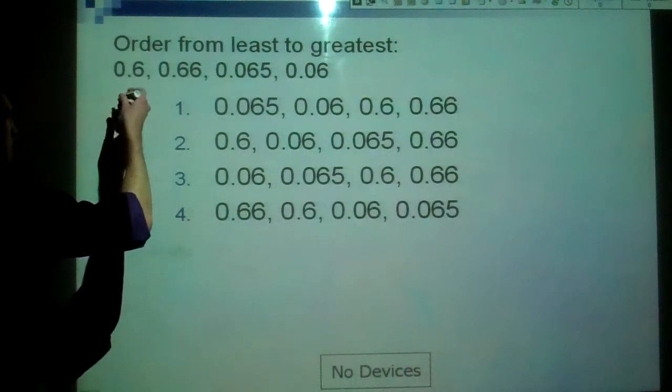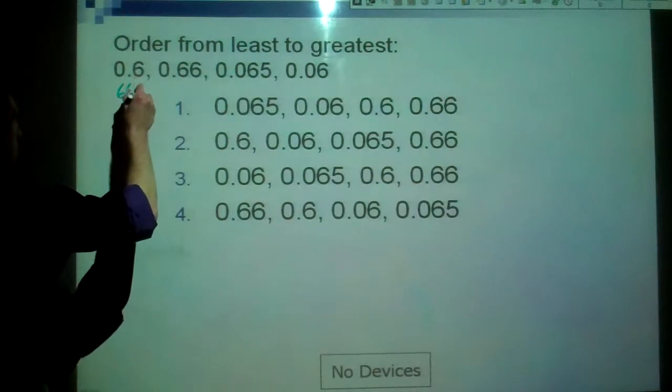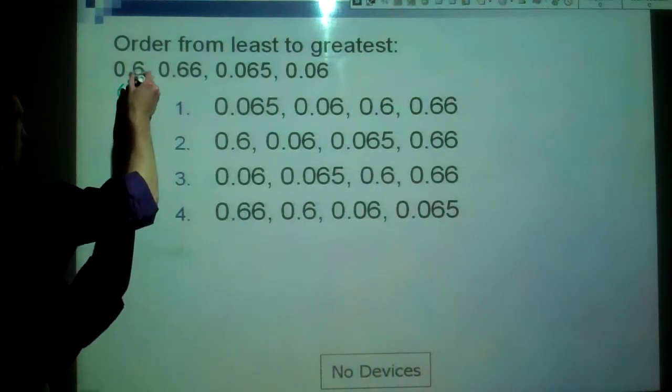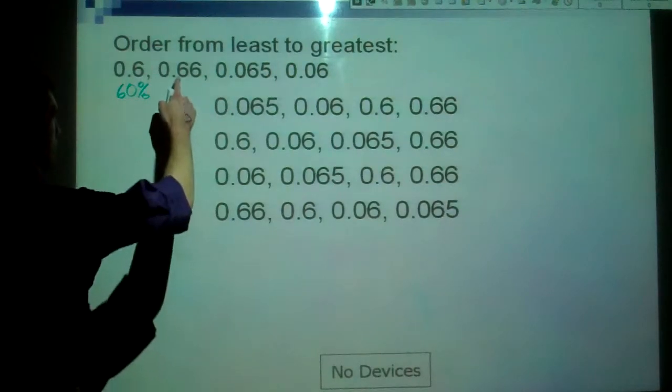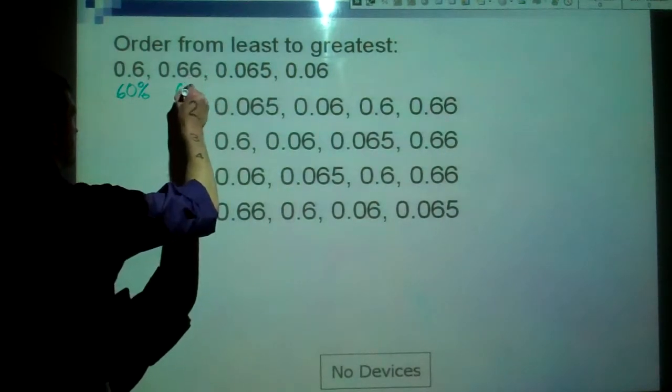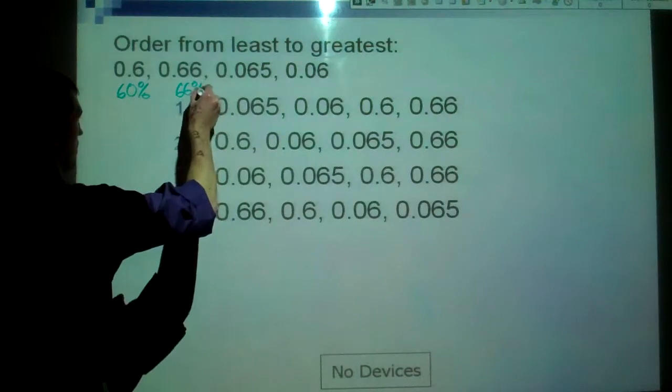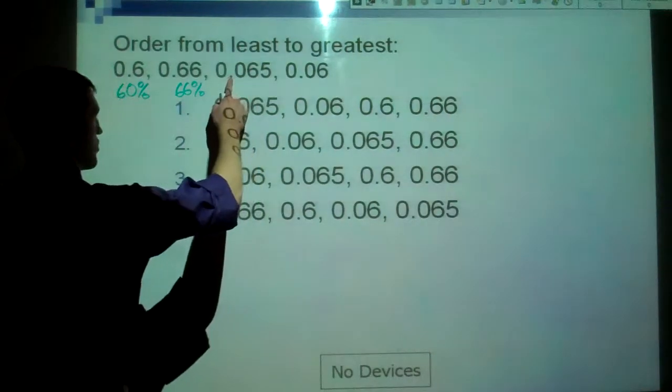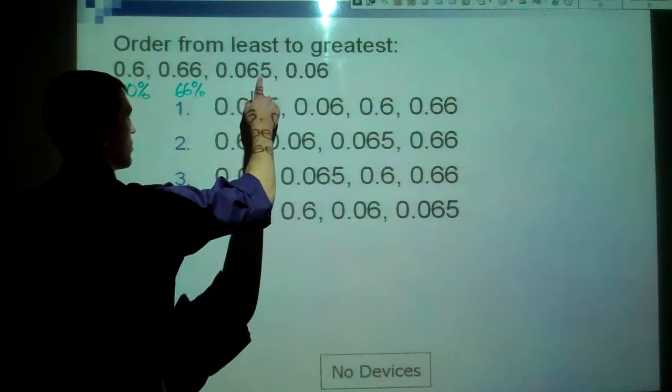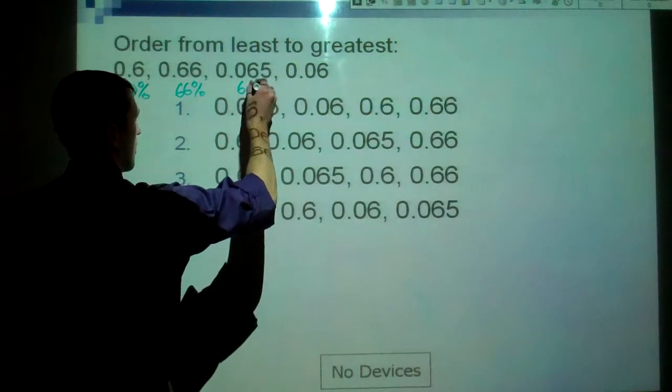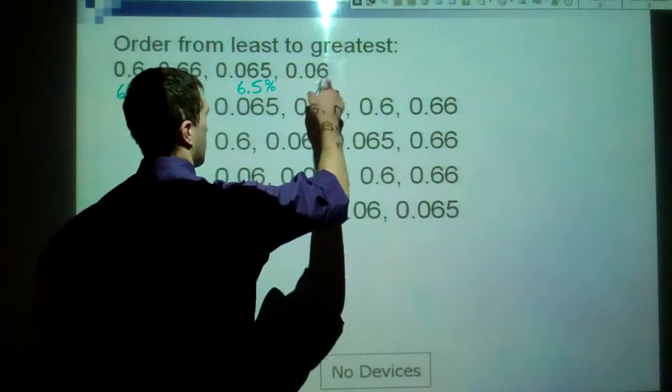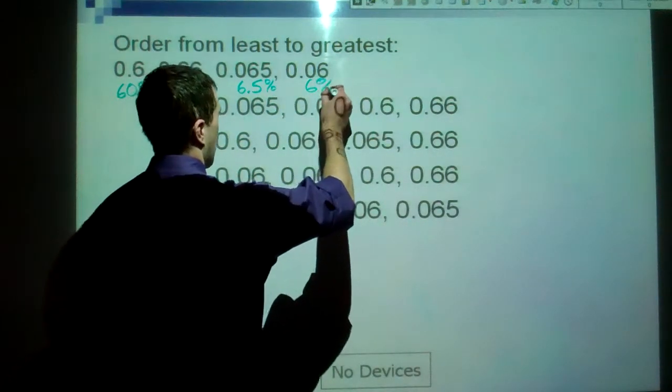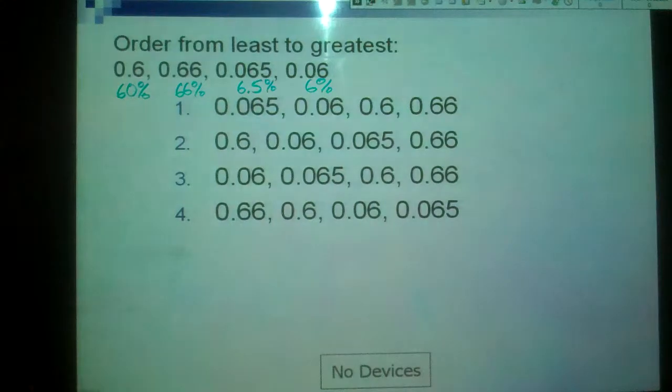So, if we move these two spots to the right, we get sixty percent. That would be like one, two, and we would add a zero. If we move these two spots to the right, we get sixty-six percent. If we move this one two spots to the right, we get one, two, six point five percent. And this one two spots to the right, one, two, six percent.